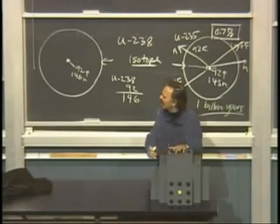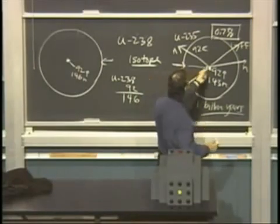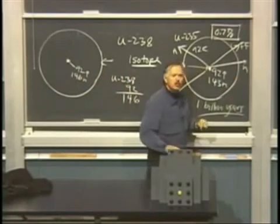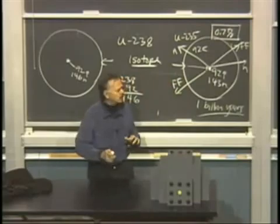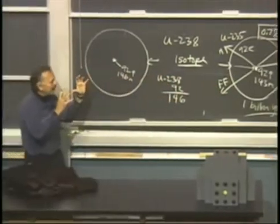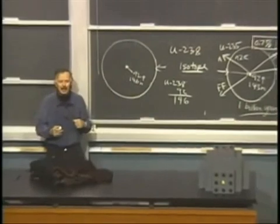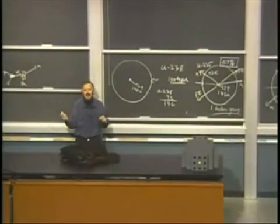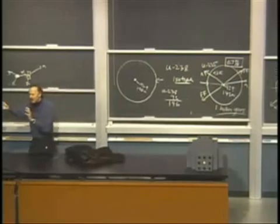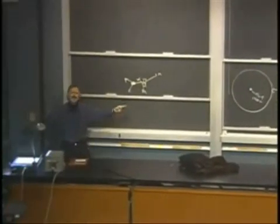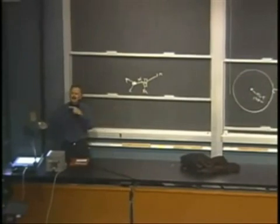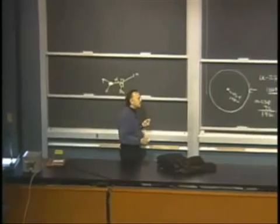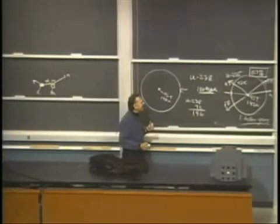A chain reaction works like this: you send one neutron in — you can get it from beryllium — this thing fissions, and out come two neutrons. If you put enough uranium around, since neutrons miss most nuclei, you need more and more material so that a hit becomes likely. When you put enough material there that a hit is likely, that's called a critical mass.